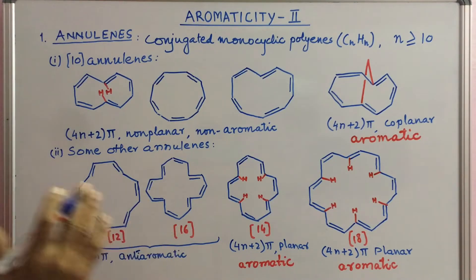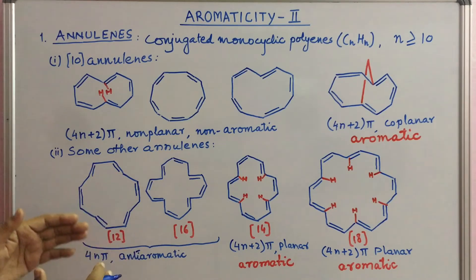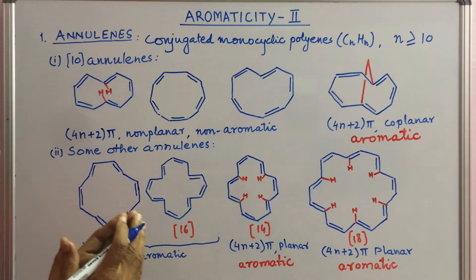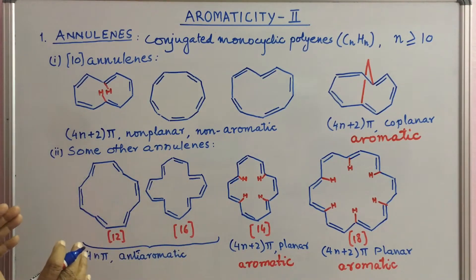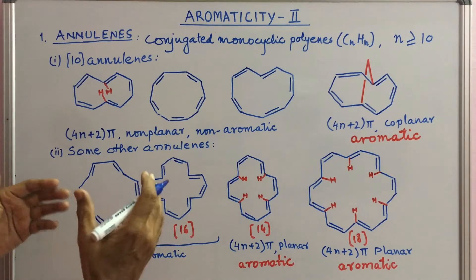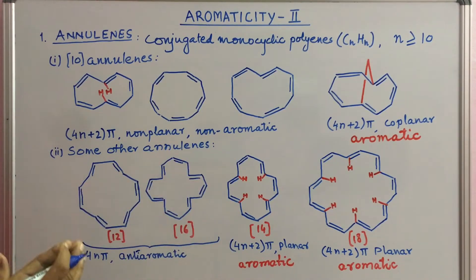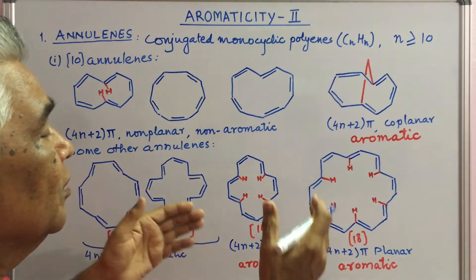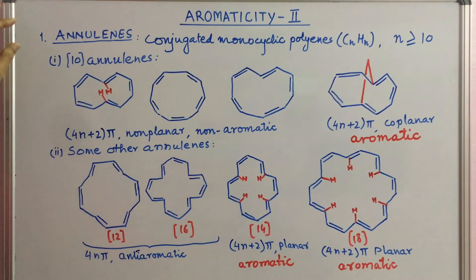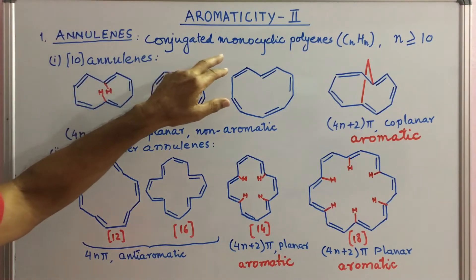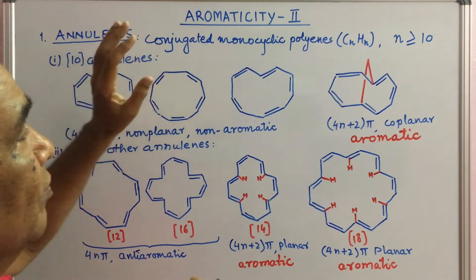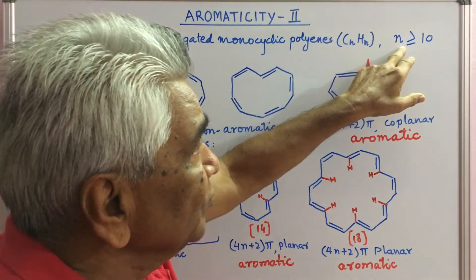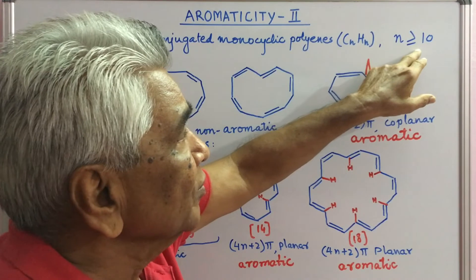We saw many examples there. Today we will see examples in which we have non-benzenoid systems — no benzene ring. How they are aromatic, that we will see. Some are aromatic, some are not; those who fulfill the requirement are aromatic. First are annulenes — these are conjugated monocyclic polyenes where n is greater than or equal to 10.